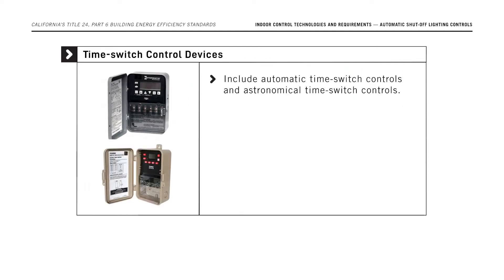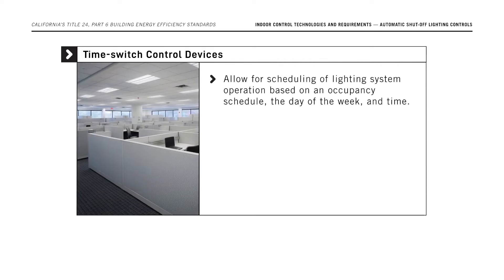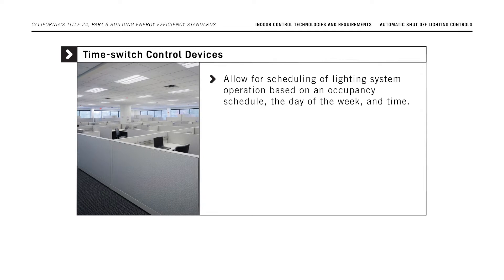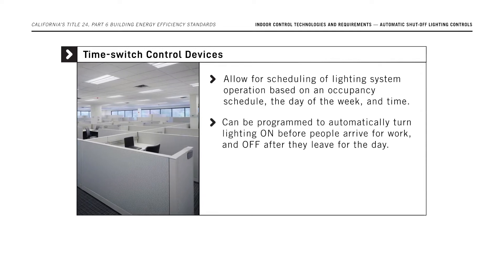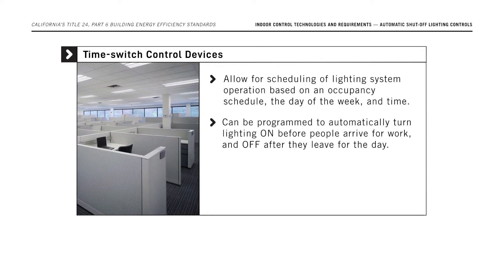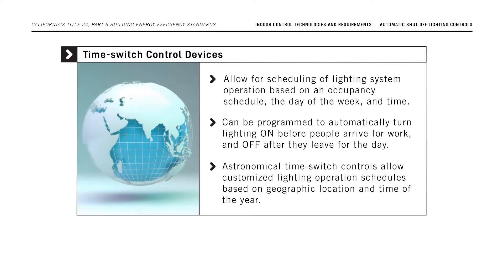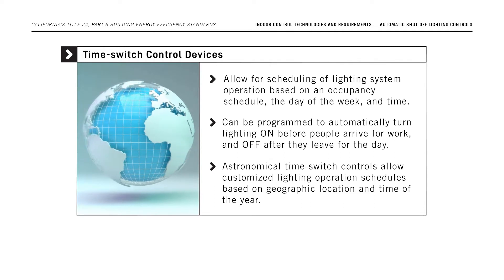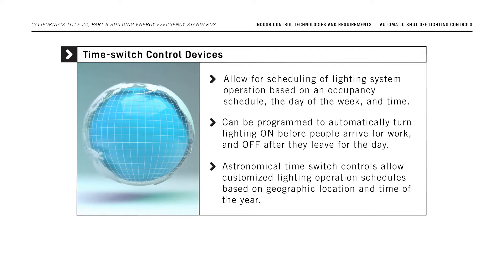Time-based control technologies include automatic time switch controls and astronomical time switch controls. Time switch controls allow for scheduling of lighting system operation based on an occupancy schedule, the day of the week, and time. A time switch control can be programmed to automatically turn lighting on before people arrive for work and off after they leave for the day. Astronomical time switch controls also allow customized lighting operation schedules based on geographic location and time of the year.